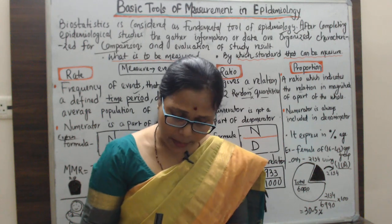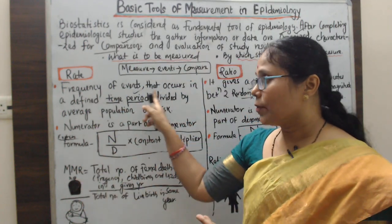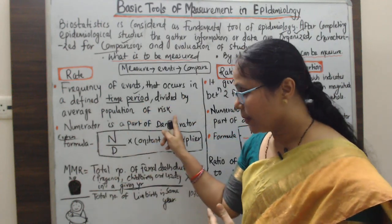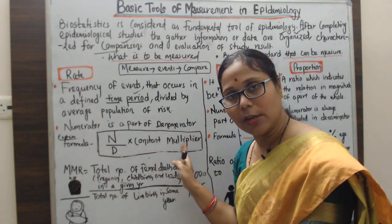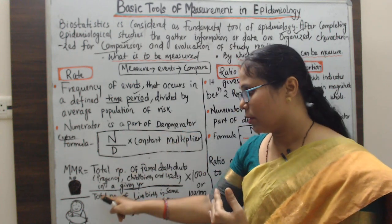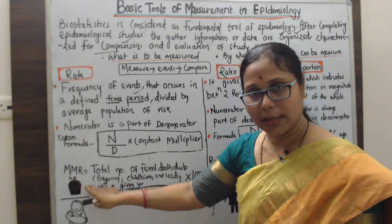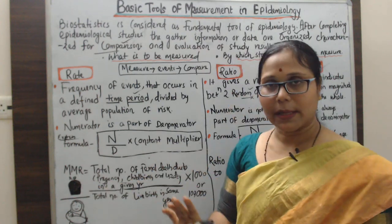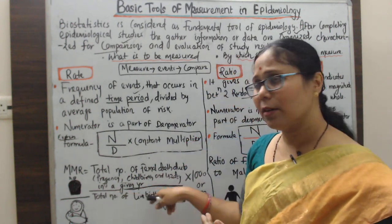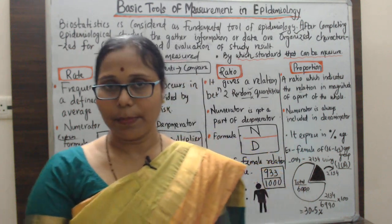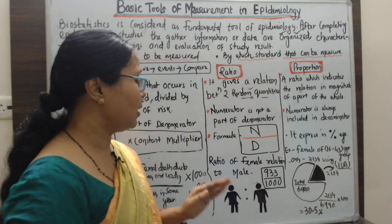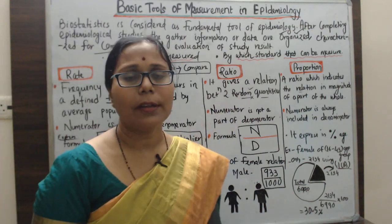Rate is the frequency of events that occur in a defined time period divided by the average population at risk, with a constant multiplier. For the maternal mortality rate: the number of female deaths due to pregnancy, childbirth, or within 42 days postpartum in a given year, divided by the total number of mothers who gave a live birth in the same area and year.